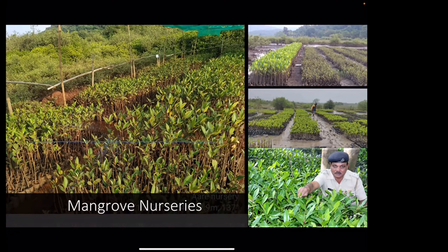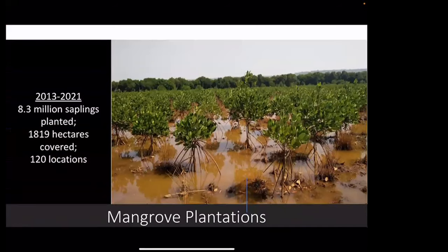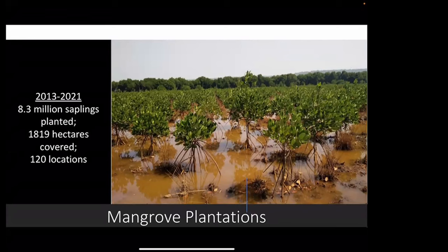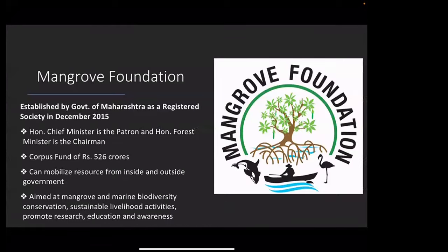We created mangrove nurseries — in all about 12 mangrove nurseries all over Maharashtra. We particularly picked up rare species from selected locations and raised them in nurseries so that their density would be higher in the natural environment. We did a lot of plantation — 8.3 million saplings were planted between 2013 and 2021, covering 1,890 hectares spread over 120 locations. This massive plantation movement used government funds as well as CSR funding support from companies like Volkswagen and ICICI Bank.